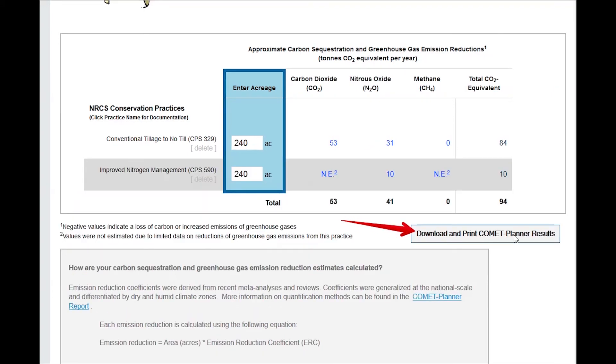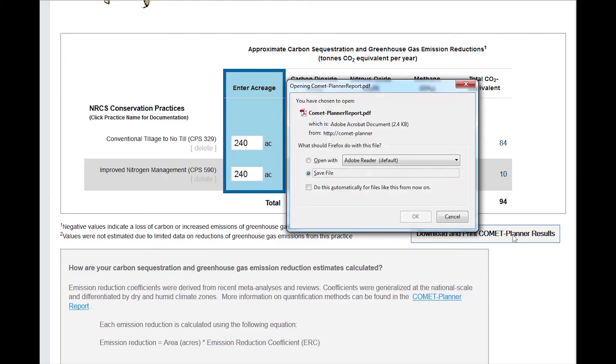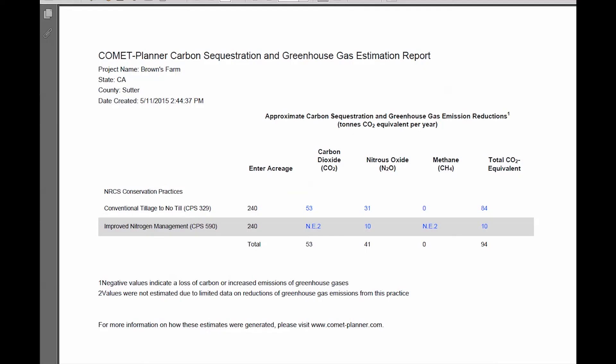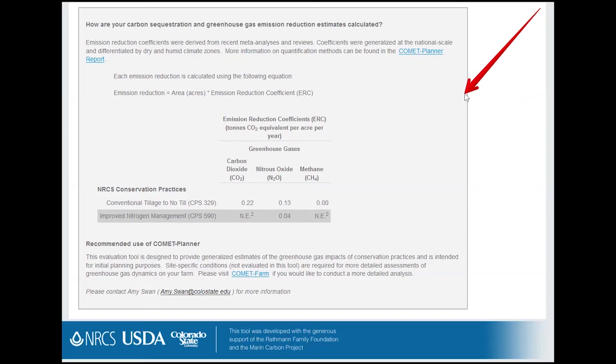When all desired conservation practice standards are selected and acreage has been entered, a full report can be downloaded and printed. The bottom table provides information on how results are calculated. Comet Planner provides generalized estimates of greenhouse gas impacts of conservation practices and is intended for initial planning purposes.